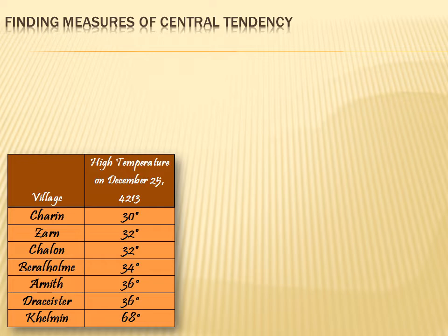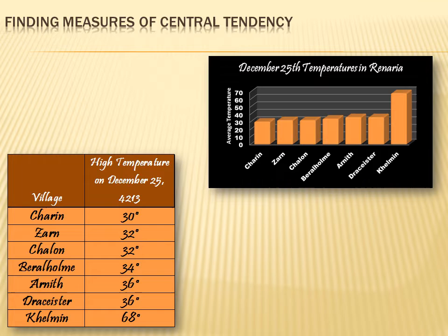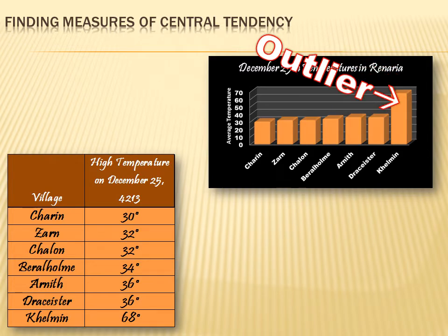We could analyze these using some statistical tools and understand the data better. For instance, we can create a bar graph showing the average high temperature on December 25th for each city. They all seem to be at a very similar value except for one — Kelnan is much, much higher. It's an outlier. That's going to create a problem and mess up the statistics. Let's explore it further and see what we find out.